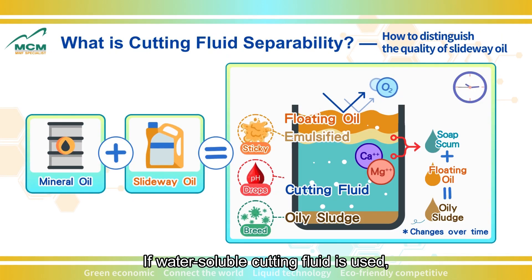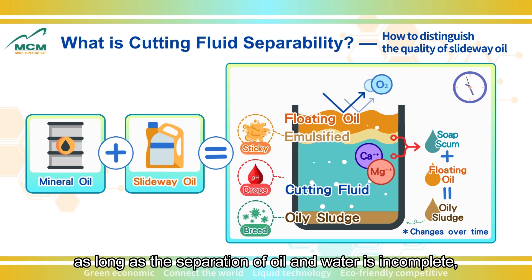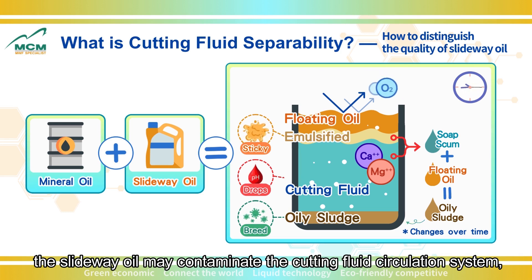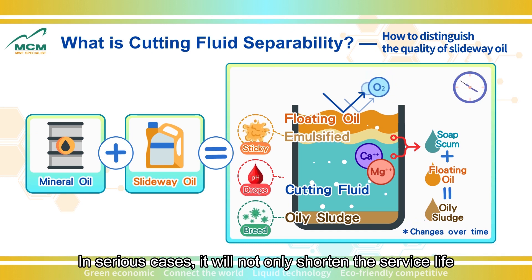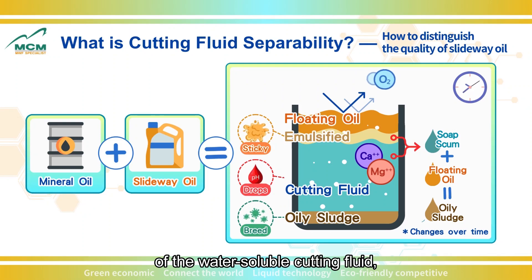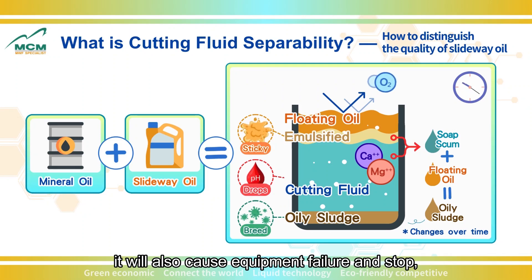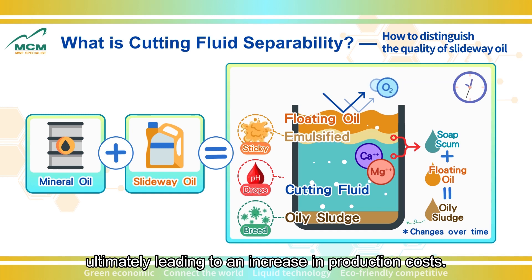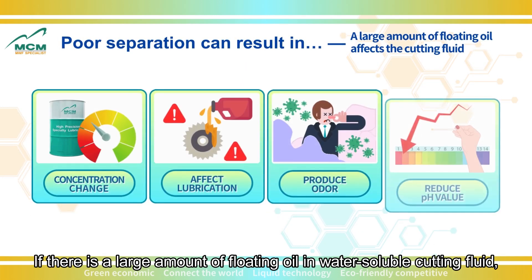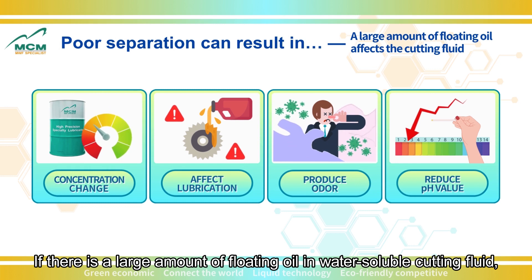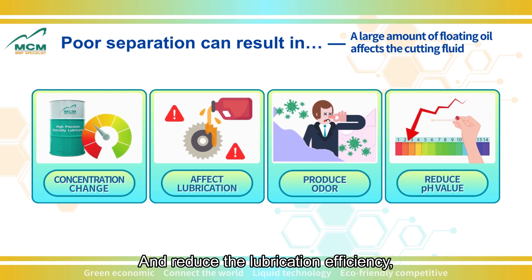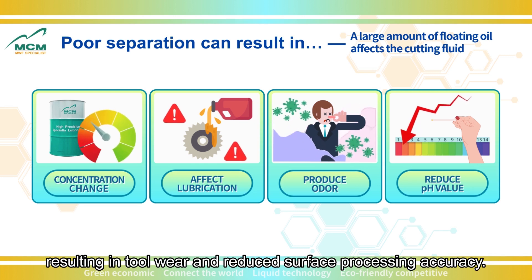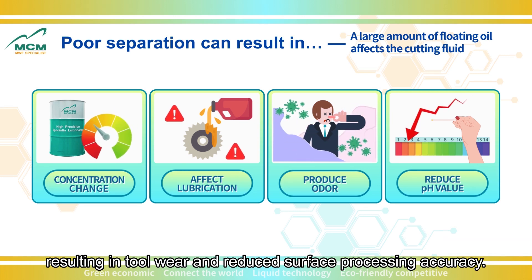If water-soluble cutting fluid is used, as long as the separation of oil and water is incomplete, the slideway oil may contaminate the cutting fluid circulation system, forming a common pollutant — floating oil. In serious cases, it will not only shorten the service life of the water-soluble cutting fluid but will also cause equipment failure and stoppage, ultimately leading to an increase in production costs. If there is a large amount of floating oil in the water-soluble cutting fluid, the concentration will change, making monitoring difficult and reducing lubrication efficiency, resulting in tool wear and reduced surface processing accuracy.